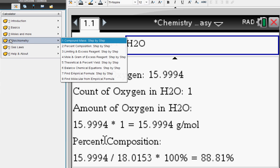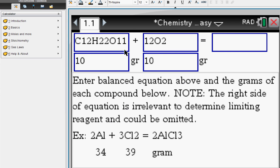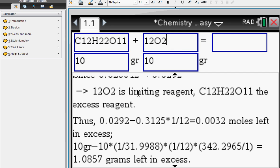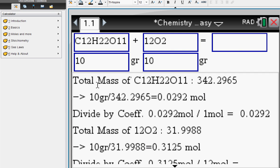What else do we have in stoichiometry? Limiting and excess reagents, step-by-step. Enter your compounds and the grams, and here you see the computation step-by-step. You see the total mass computation.